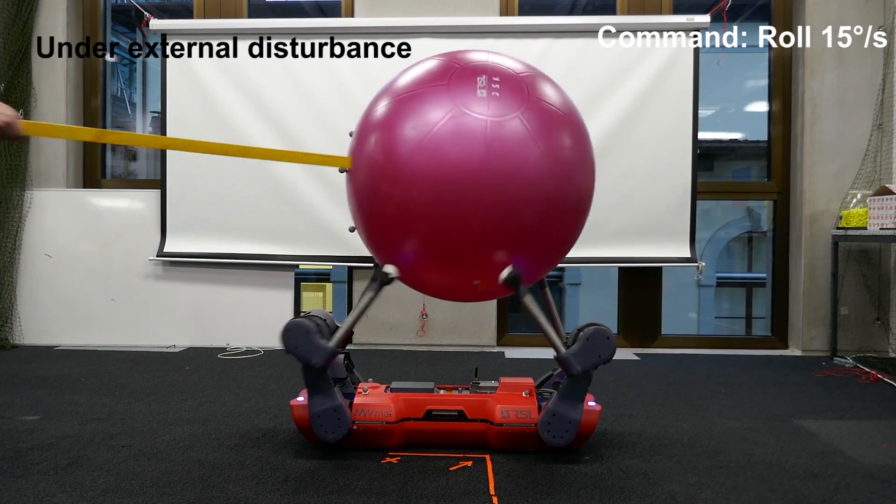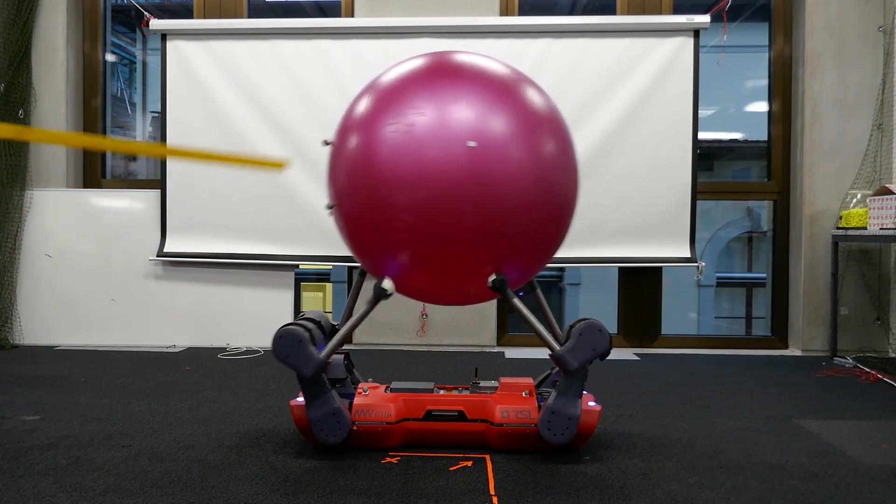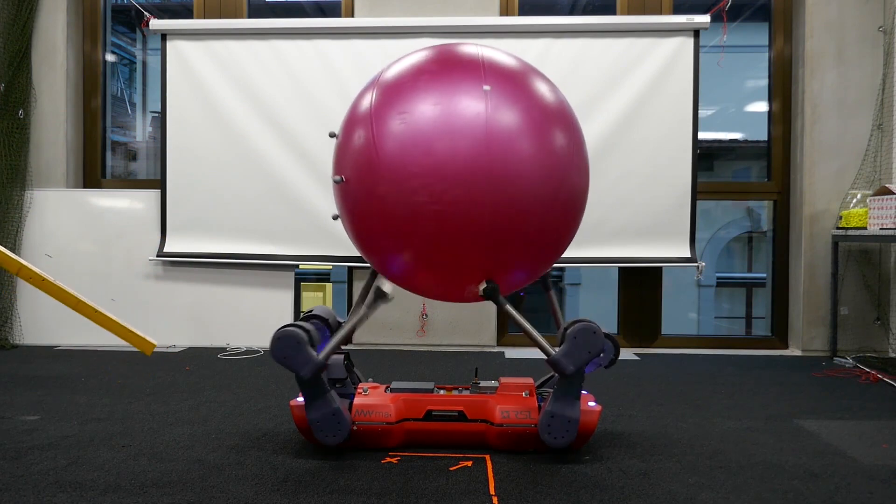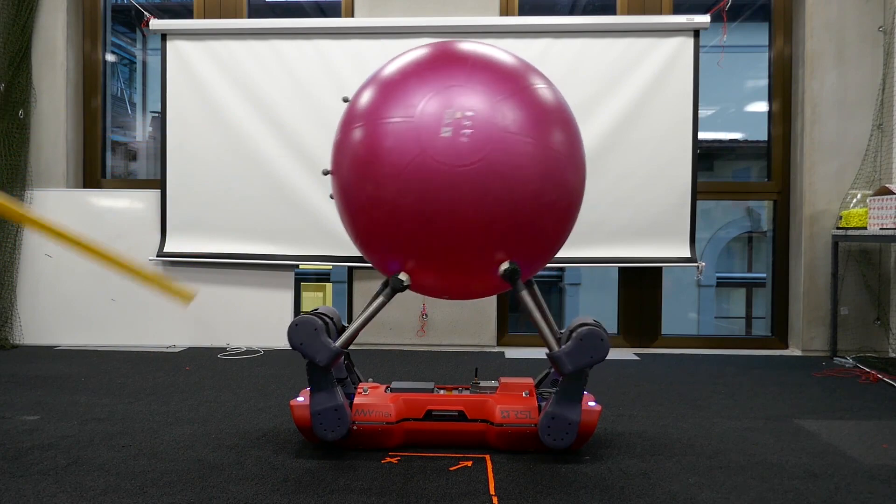For experimental evaluation of robustness we apply a set of random external forces to the ball by poking it with a stick. The system is able to recover from these disturbances and continues to execute its manipulation task.